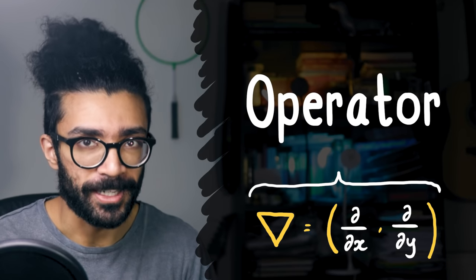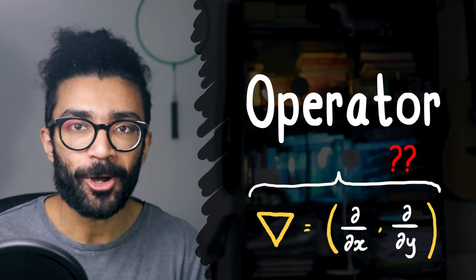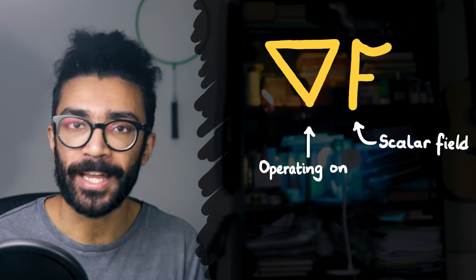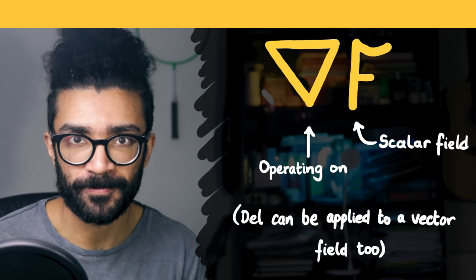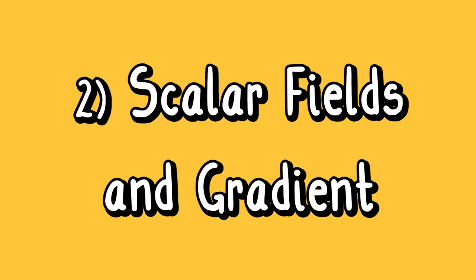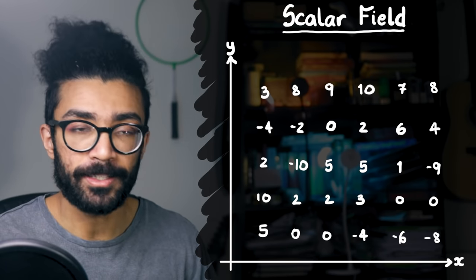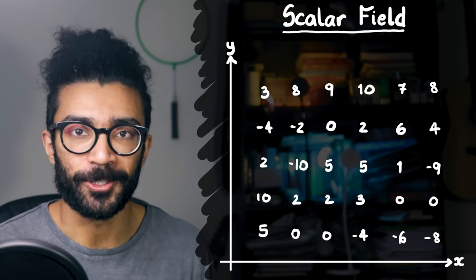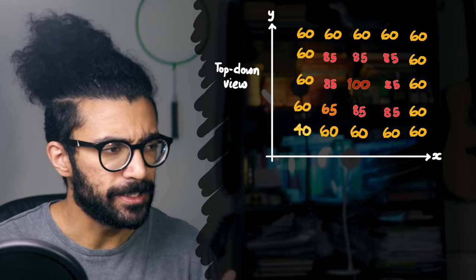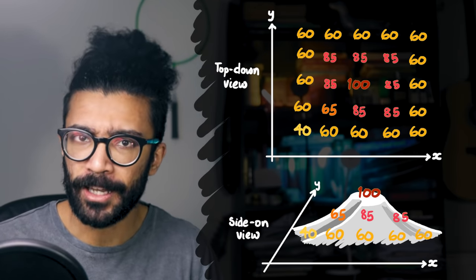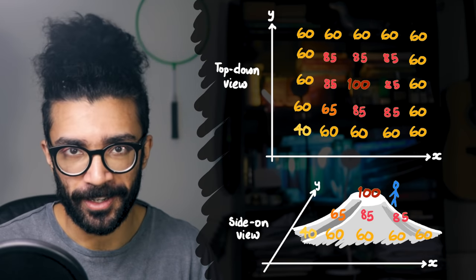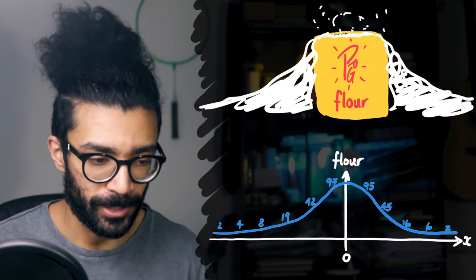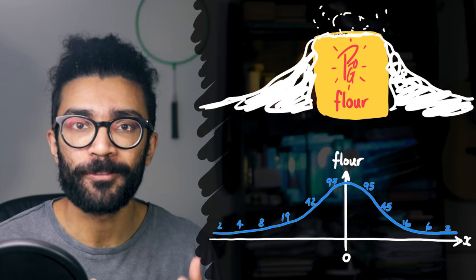But we keep saying this word operator — what does it actually mean? Well, the Nabla operator can operate on, or do stuff to, certain mathematical entities. In this case, scalar fields or vector fields. A scalar field is basically a field of numbers or values — every point in a given space can be assigned a value. We can use scalar fields to represent things like altitude on a map, representing how high above sea level you would be at that point, or to represent the amount of flour found in a given region of space after we'd squished our bag of flour.